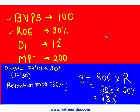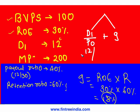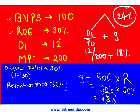Now we can calculate cost of equity: D1 divided by P0 plus g. D1 is 12, P0 is 200, g is 18 percent. So 12 divided by 200 equals 6 percent, plus 18 percent gives a total cost of equity of 24 percent.